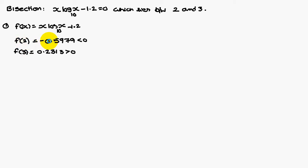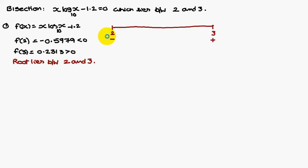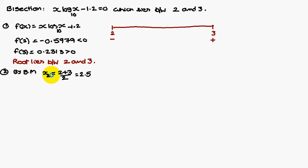The root always lies between 2 and 3 — not the values minus 0.5979 and 0.2313. Now consider a real line and represent the numbers 2 and 3. For 2, it is a negative value — I am writing the negative sign. For 3, it is a positive value — I am writing a positive sign. So, using bisection method, x₂ is equal to (2 + 3) / 2, that is nothing but 2.5.